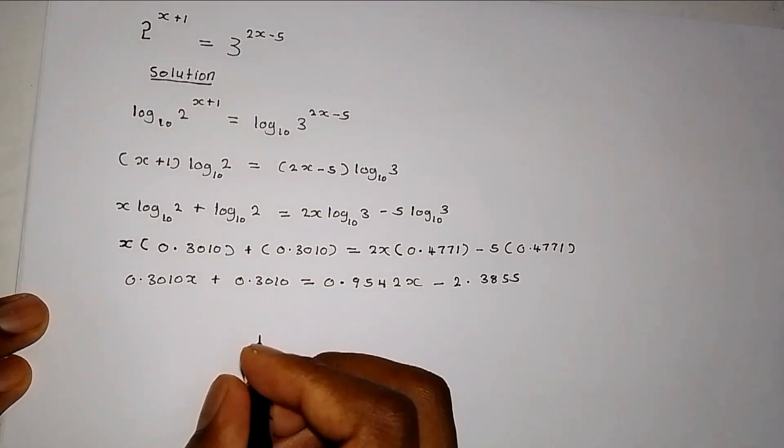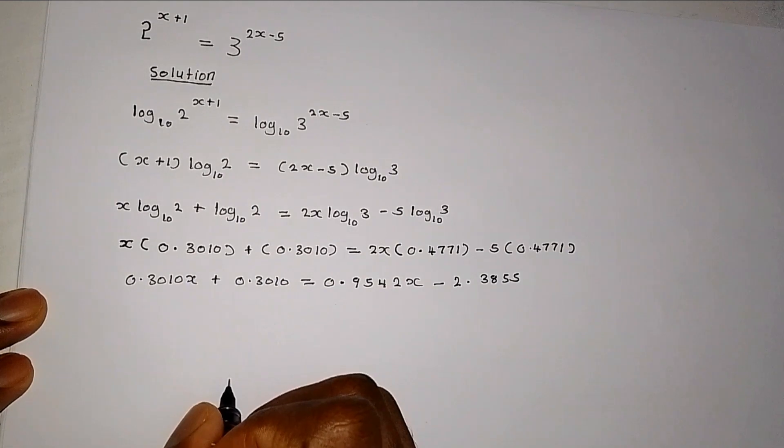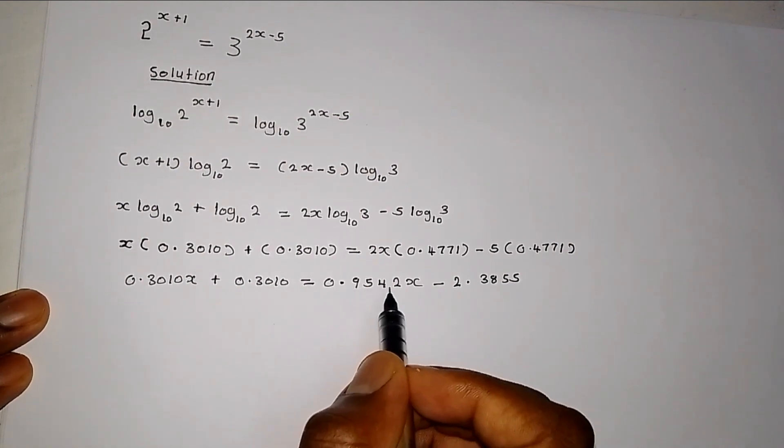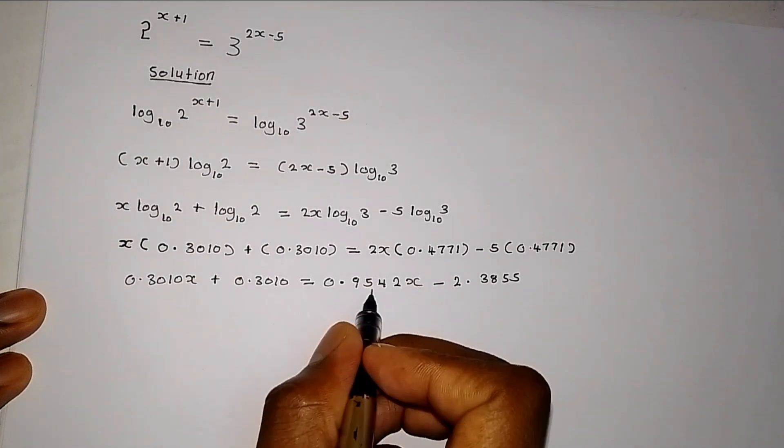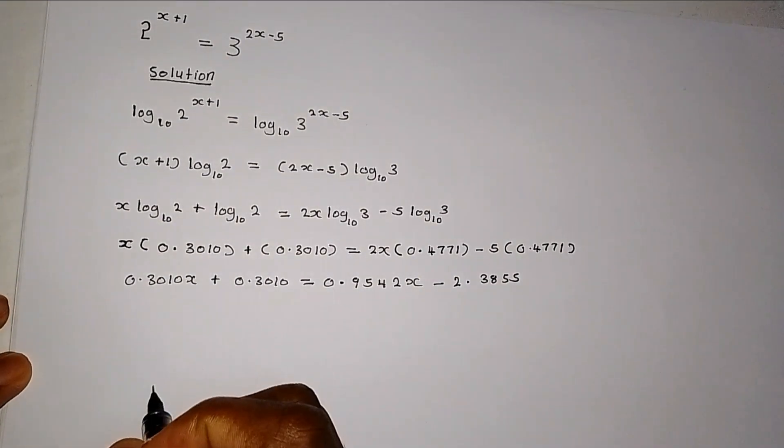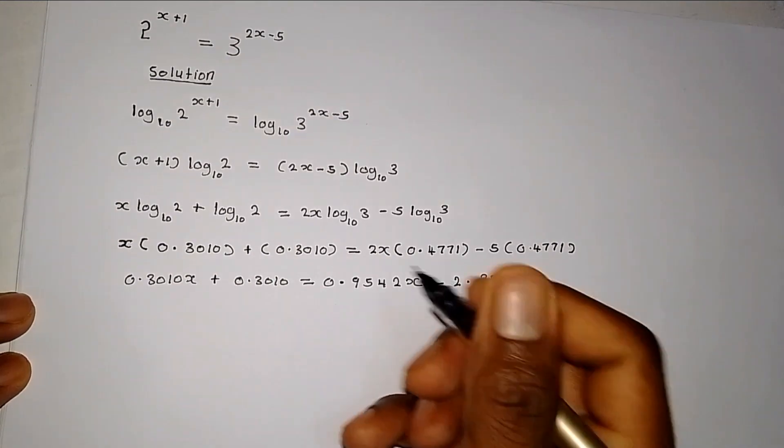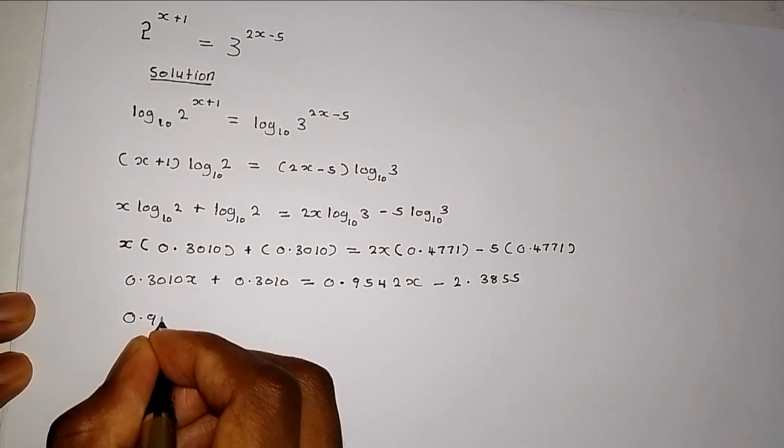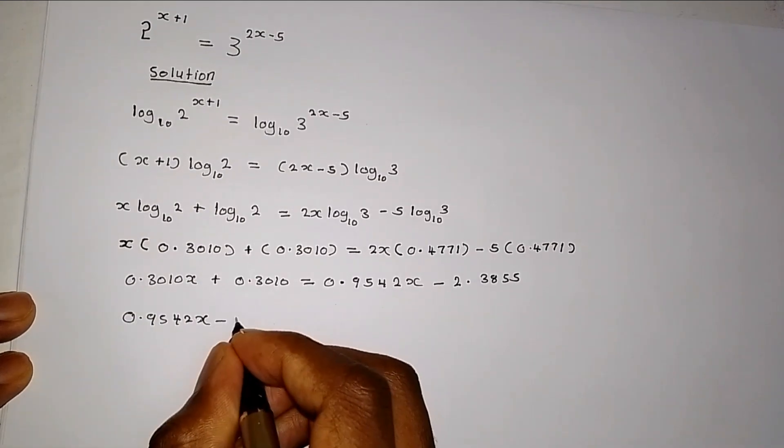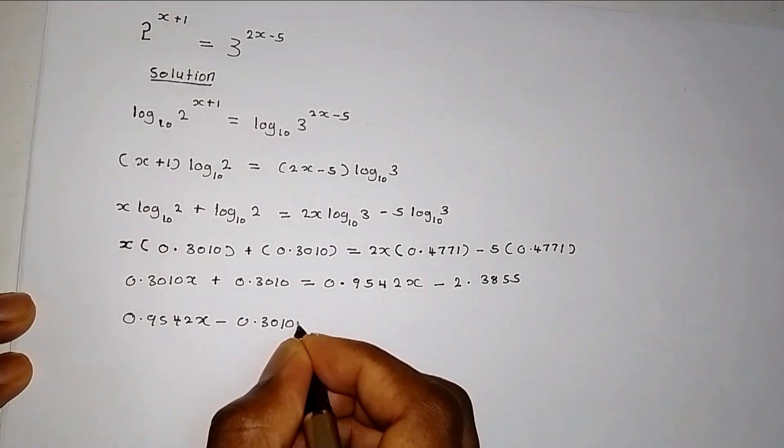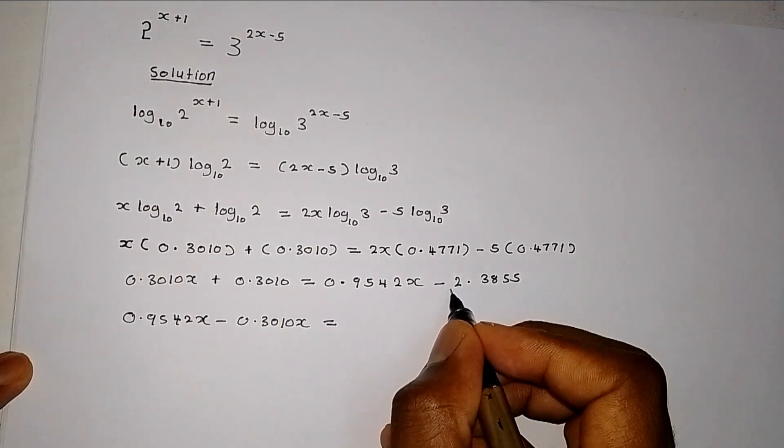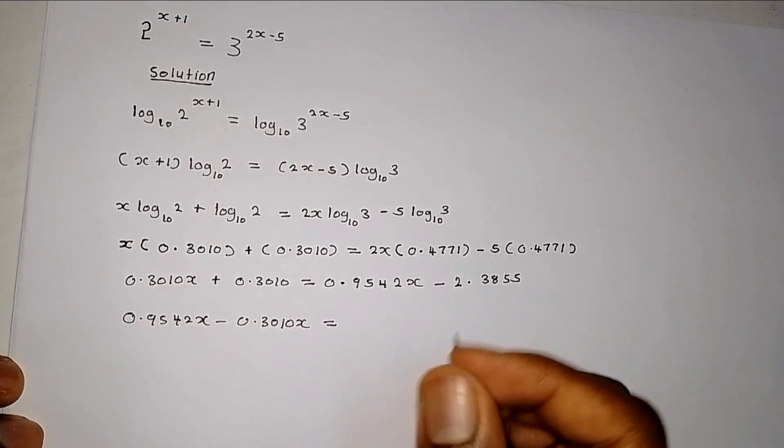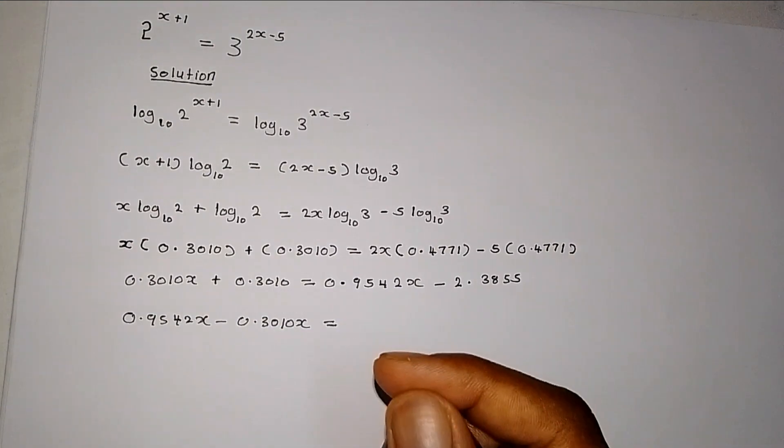Now, we've opened the brackets. The next step is to collect the like terms. And for the values of x, the values that are having x, you can see that 0.9 is greater than 0.3. So when we bring it on this side, it will be a subtraction, or when you take this on the other side, it will still be a subtraction. So take the highest value, which is 0.9542x, subtracting this 0.3010x, which must give you, if at all you were to bring this one on this side, it will give you a positive. So when you bring it on the other side, it will still be a positive, because the result would have been a negative.